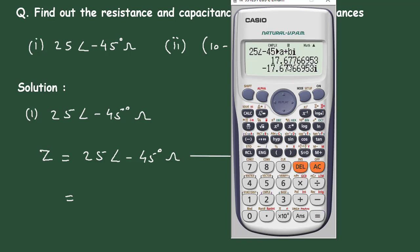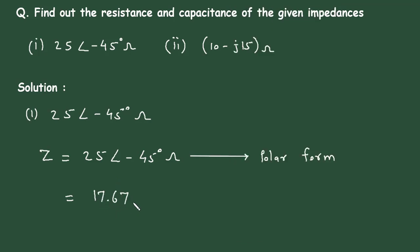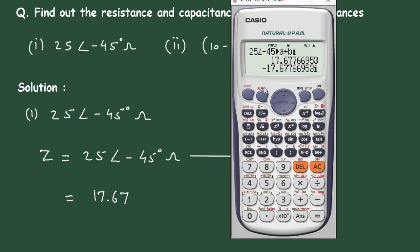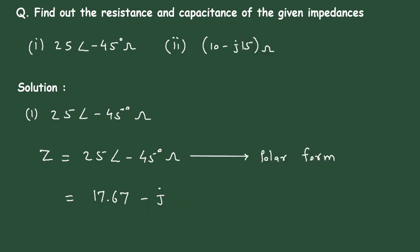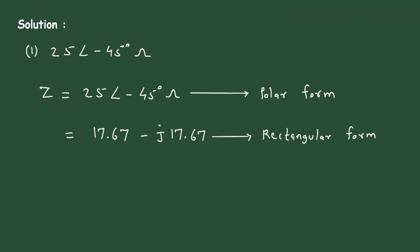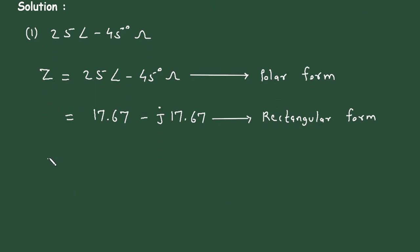The result is 17.67. This is the rectangular form. The standard equation for impedance is Z = R minus j·XC, where the minus sign applies to capacitive reactance.